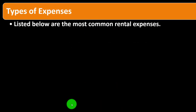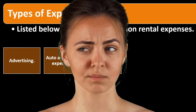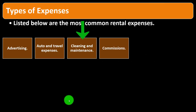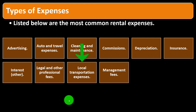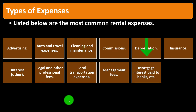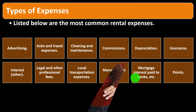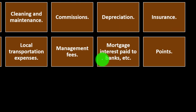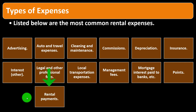The most common rental expenses include: advertising, auto and travel expenses, cleaning and maintenance, commissions, depreciation, insurance, interest, legal and other professional fees, local transportation expenses, management fees, mortgage interest paid to banks, points, rental payments, repairs, taxes, utilities, and so on. Note that mortgage interest here is for rental property deducted on Schedule E — not your personal residence on Schedule A — unless you're allocating between both.